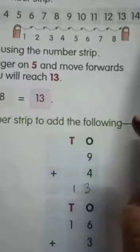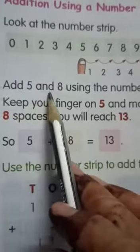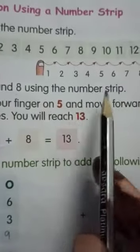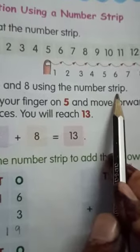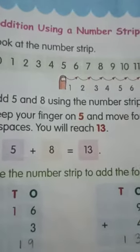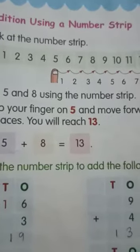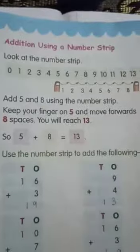Here, we have a number strip. Now, we have to add 5 and 8 using the number strip. Children, already we have learned this in our previous lesson addition. But, till 10 only we have done. Now, here we are doing till 20.